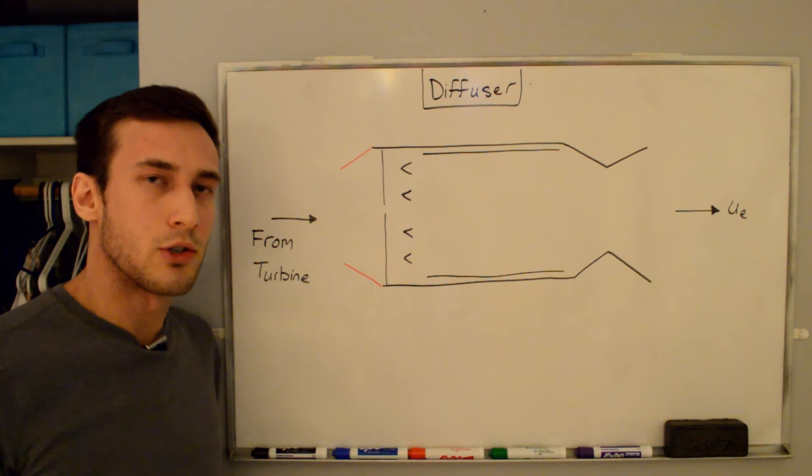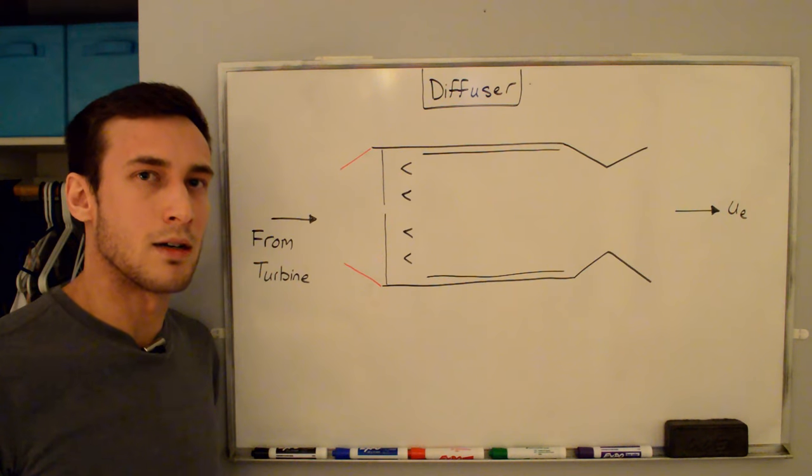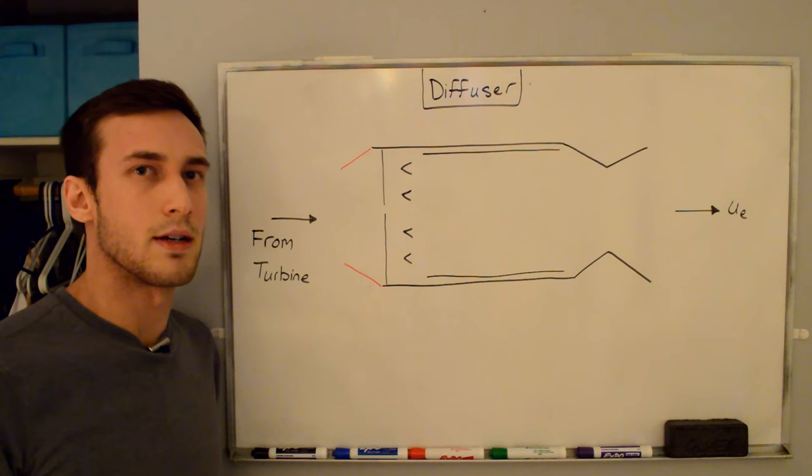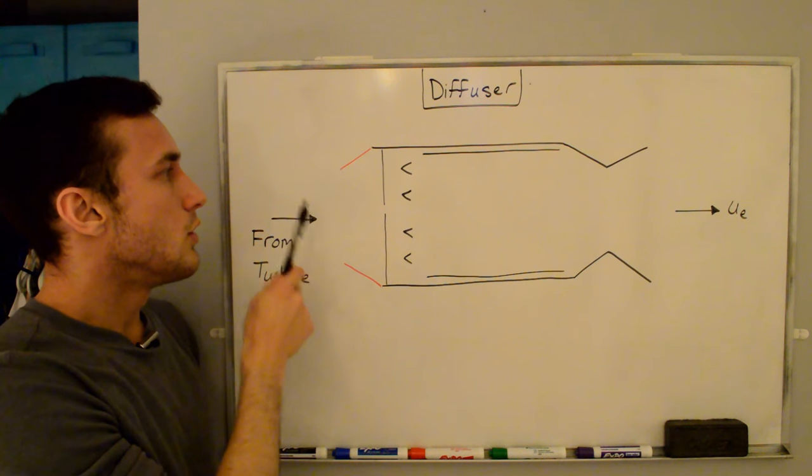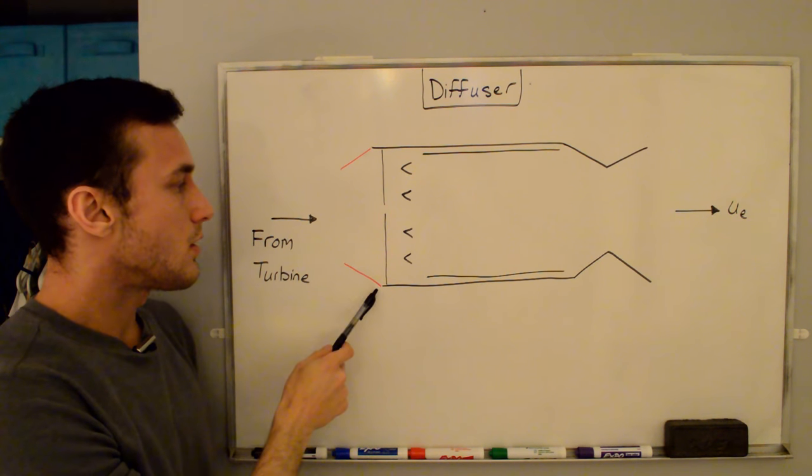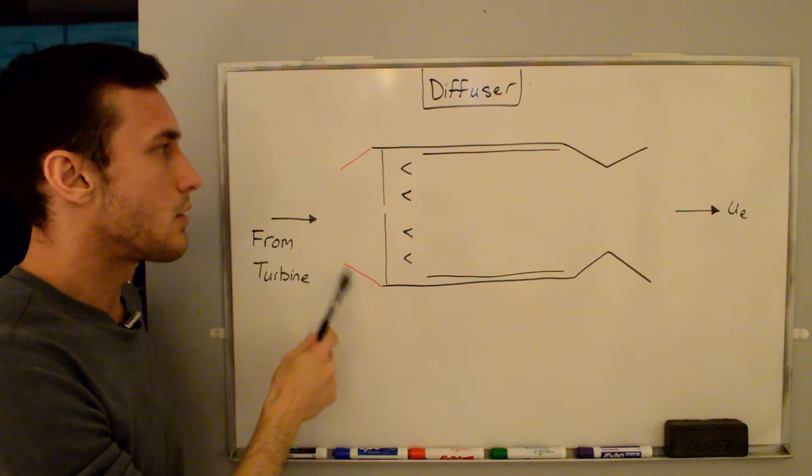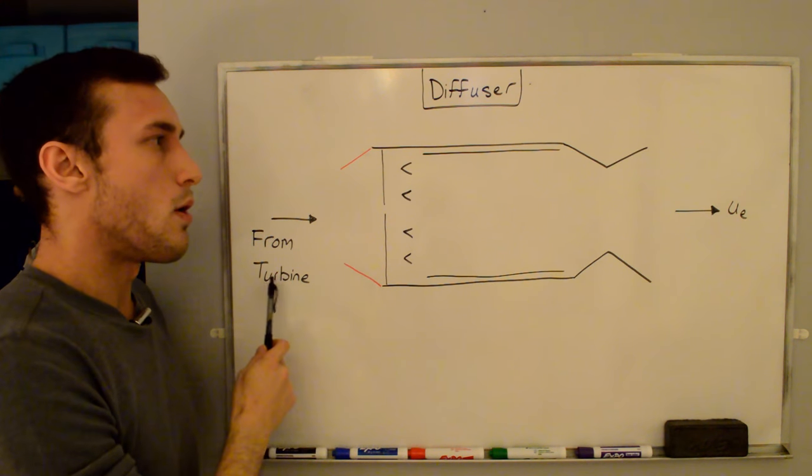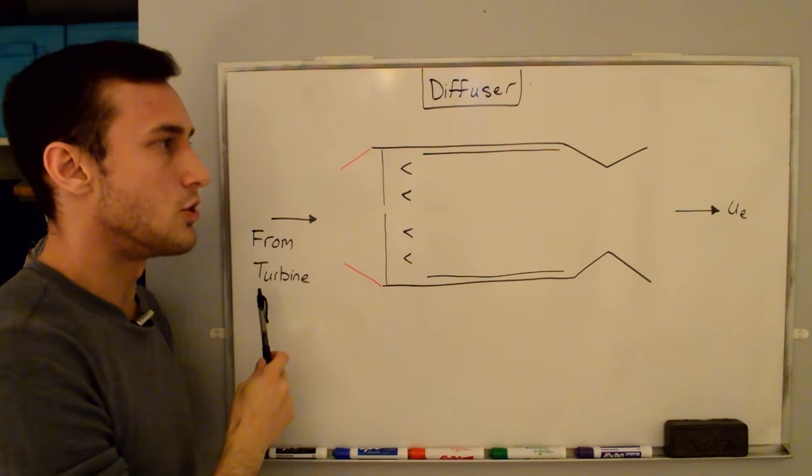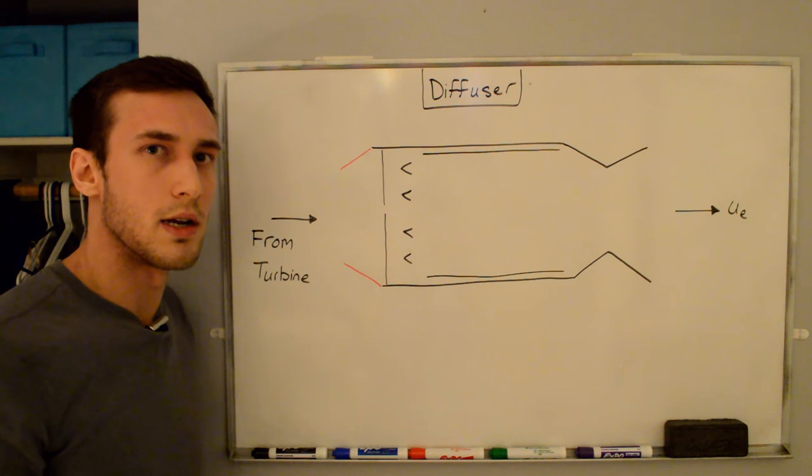Also, from Rayleigh flow, the stagnation pressure loss for the duct is higher at higher Mach numbers, and recall that we want to reduce this stagnation pressure loss for the engine. Since the flow coming out of the turbine is subsonic, to slow it down even more, we need to have an increasing area, but we don't want the area to increase too much because we want to keep the diameter of the afterburner pipe about the same as the components as the other components in the engine so we don't have any problems with installation on aircraft.